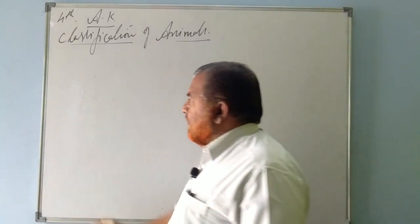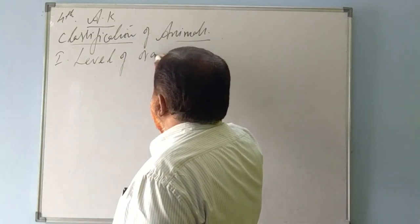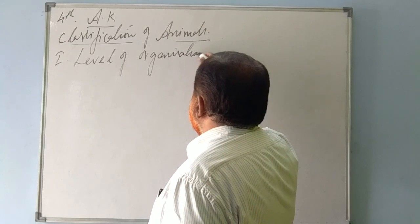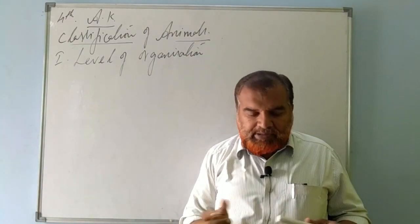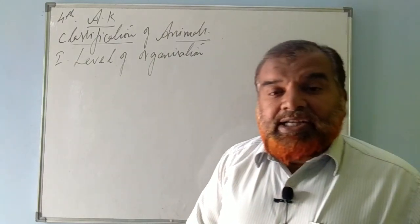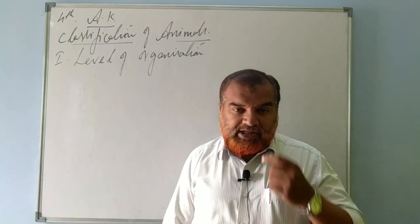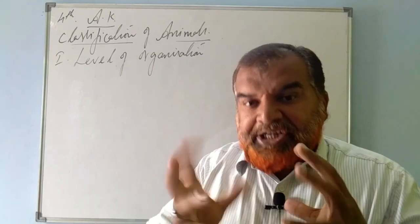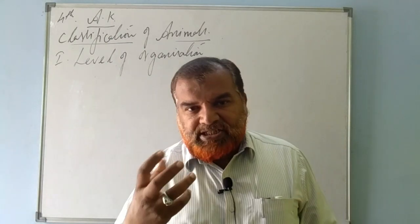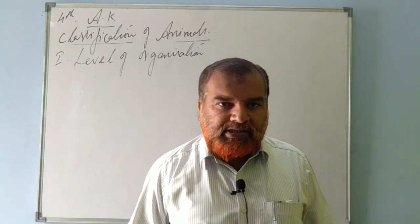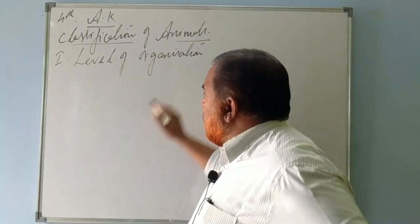The first characteristic is level of organization. You can write it with 'S' or 'Z' — one is British English, the other is American English, it doesn't matter. Organization means how animals are arranged, how they are fixed, how they are made up of — what is the arrangement of their cells, organs, and tissues. This is the first basis of classification of animals.